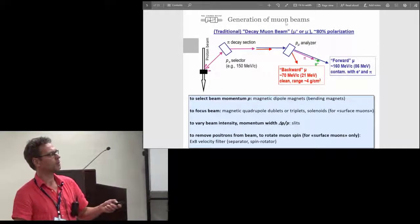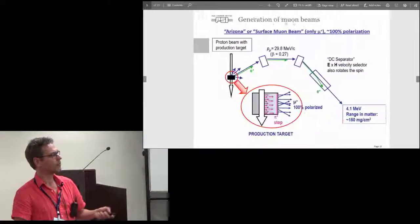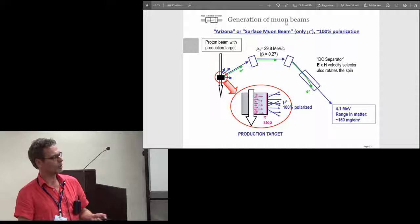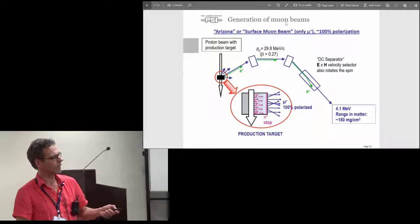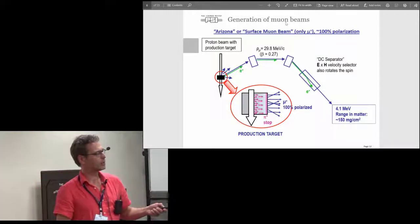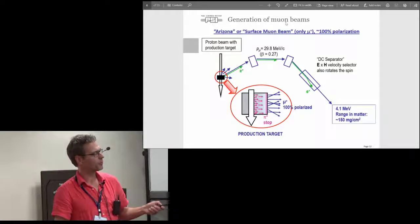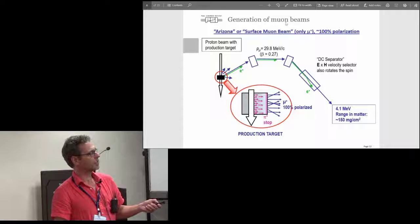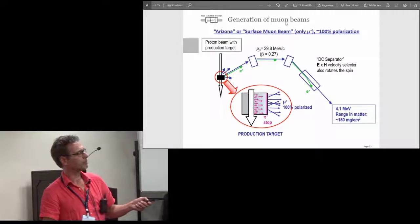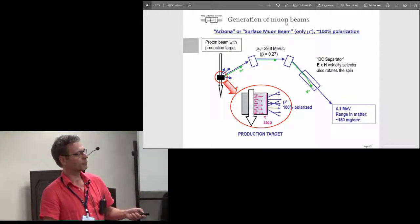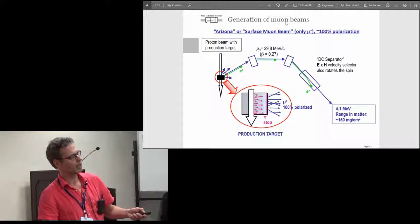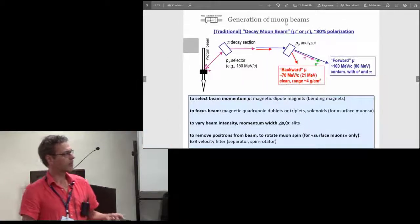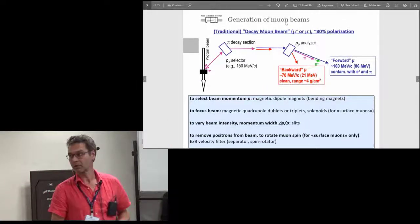The polarization of these beams is only 80 percent. If you want to have a higher stopping density, you are using what is called today the surface muons. These are muons which are generated by pions stopping at the surface of the production target, which is typically graphite. Then you select these muons which have this 4.1 MeV and they have a much higher stopping density. So they stop within 100 micrometers or few hundred micrometers, whereas these MeV beams stop in centimeters.